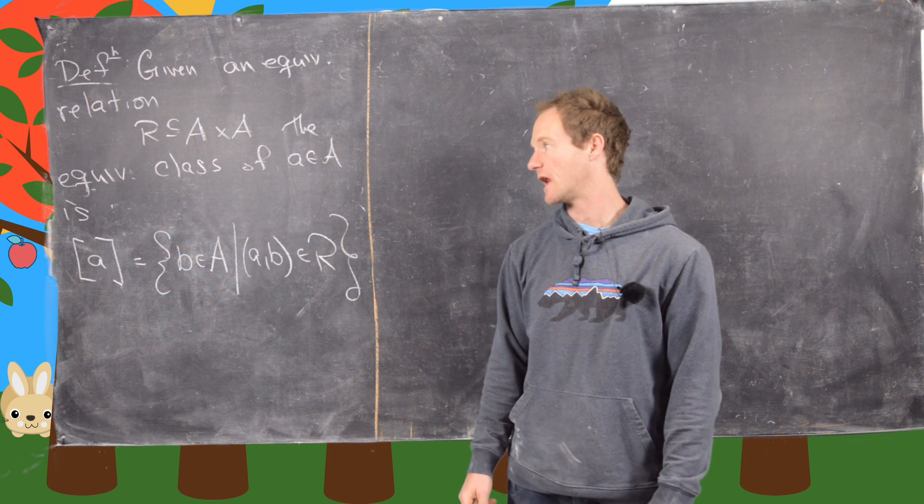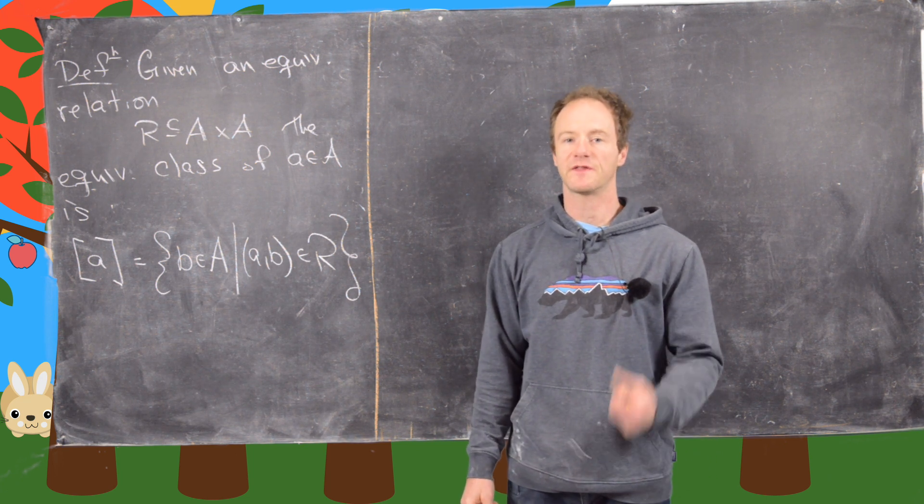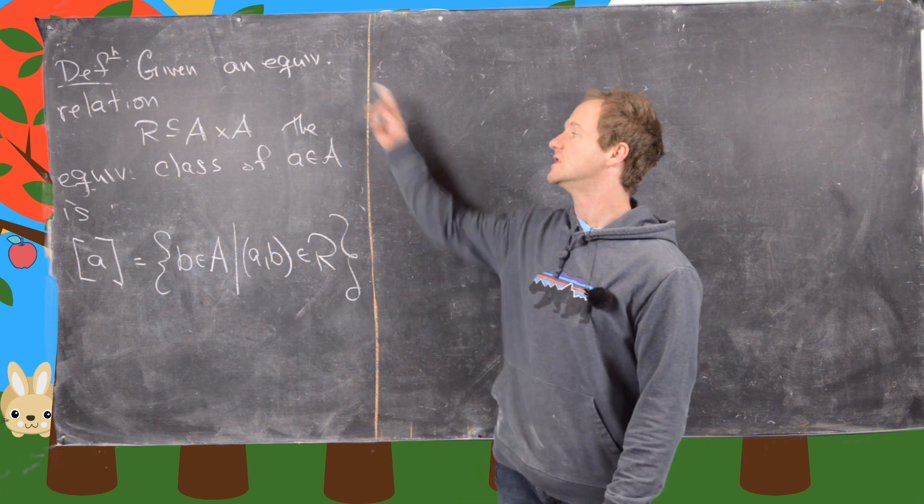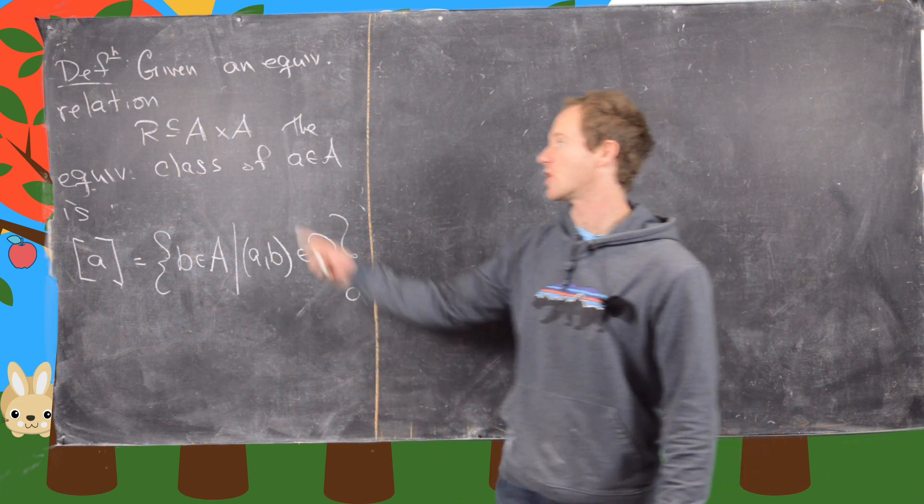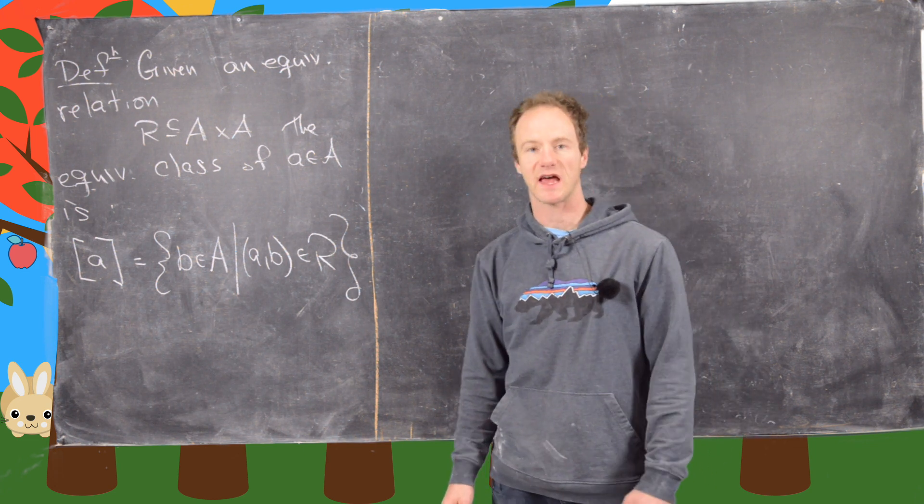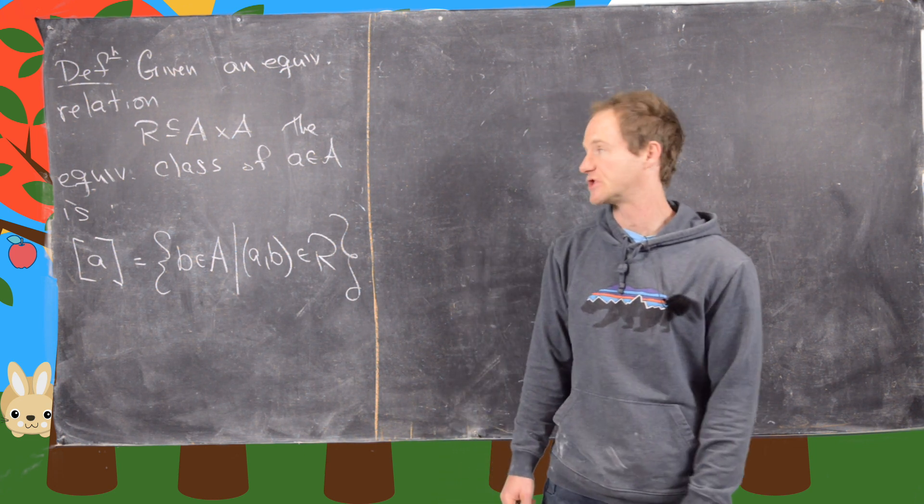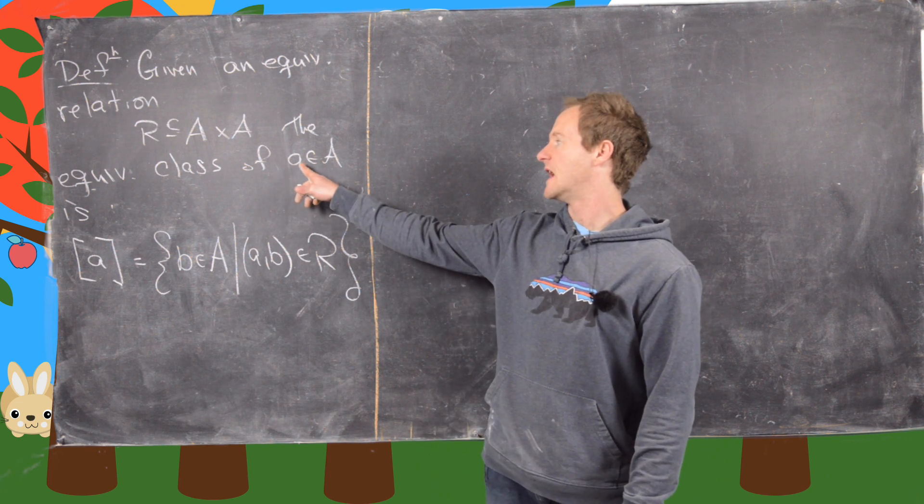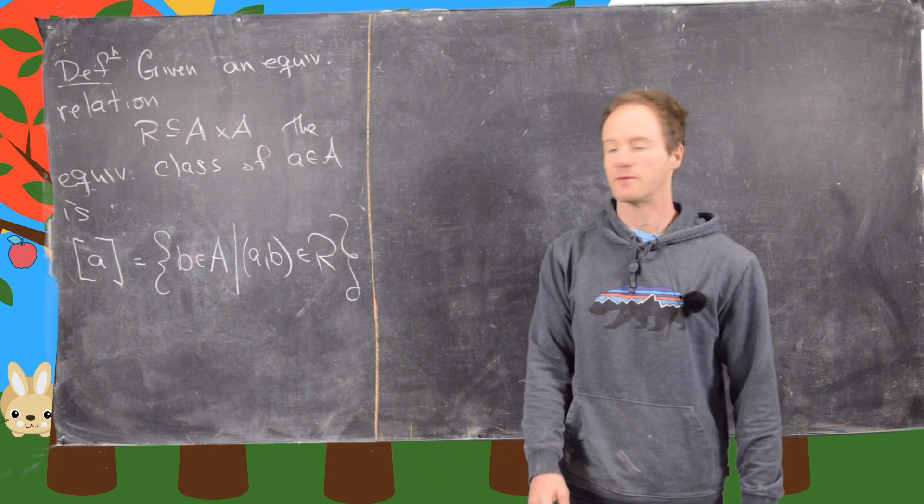So now that we've looked at the notion of an equivalence relation, we look at the complementary notion of an equivalence class. So given any equivalence relation R of the set A, so again, that's a subset of A cross A with those three properties that we just talked about.